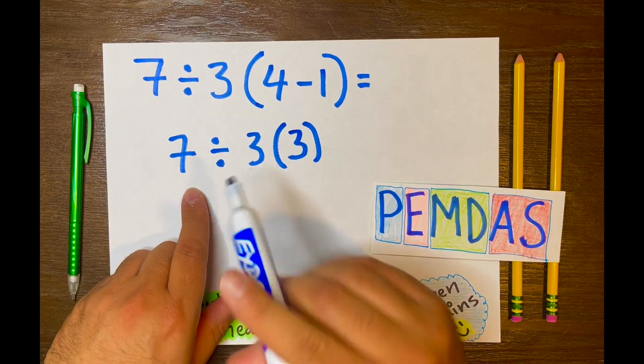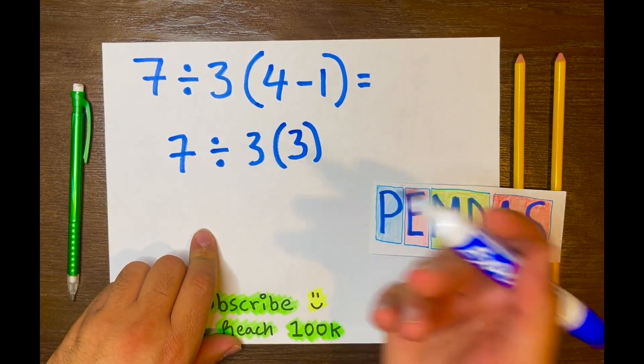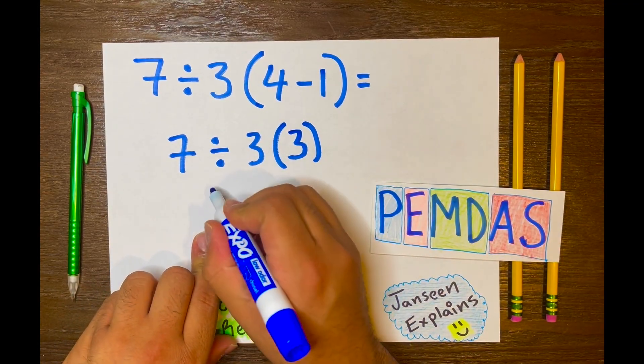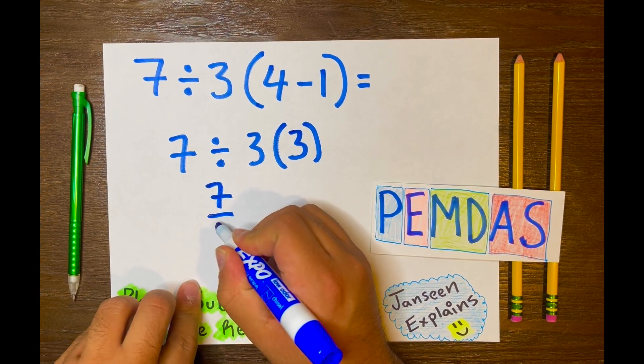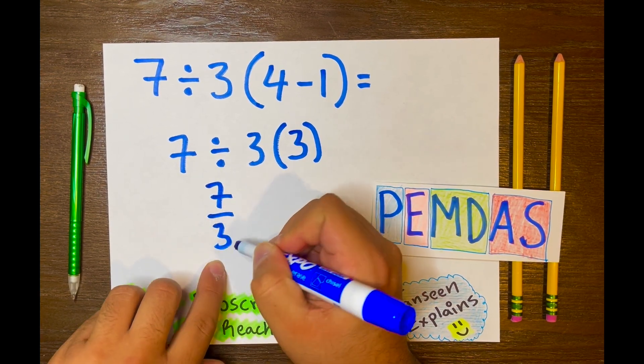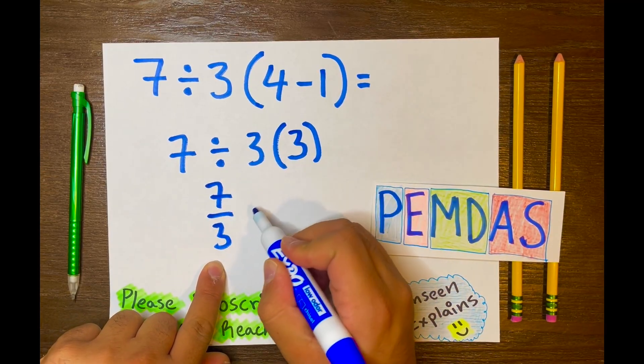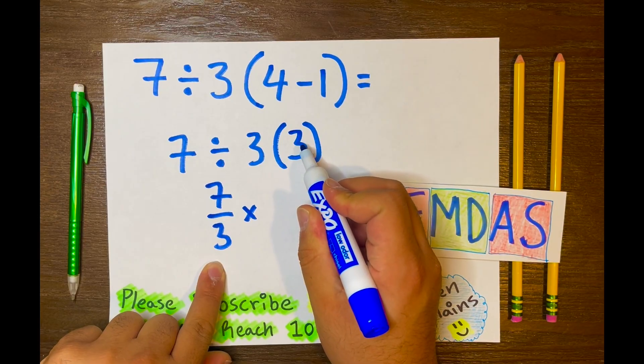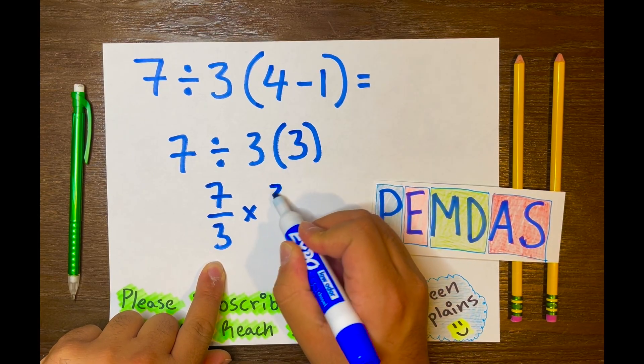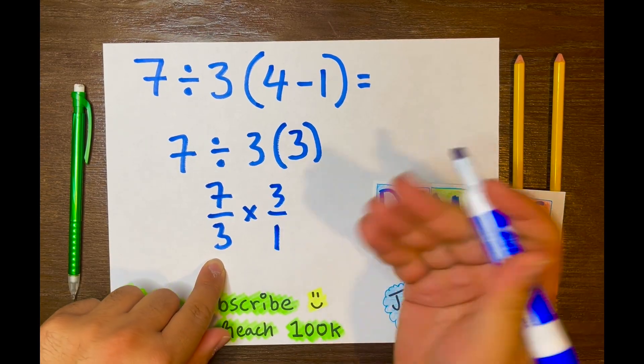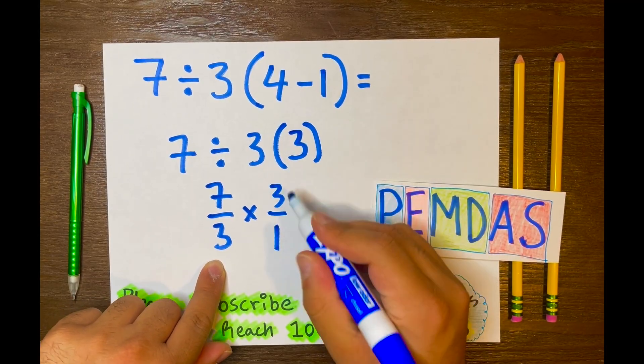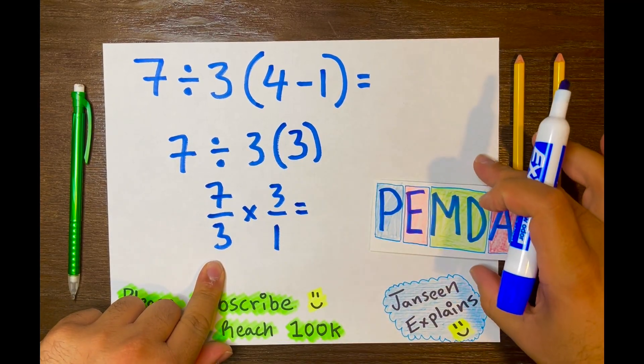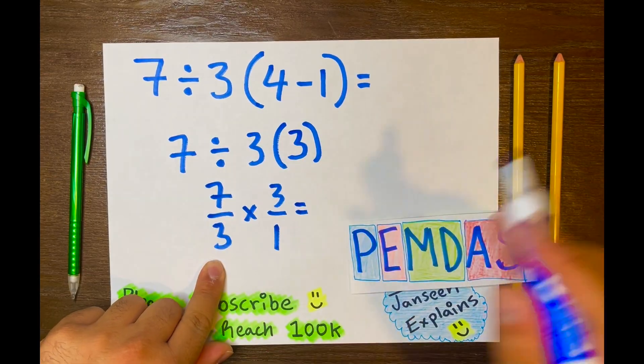Now 7 divided by 3, to make the math easy, let's write it in a fraction: 7 over 3. And then let's go ahead and bring down the times 3, but let's make the 3 into a fraction: 3 over 1 to make the math easy. We know 3 over 1 equals 3, does not change the 3. And all we have to do now is multiply across.